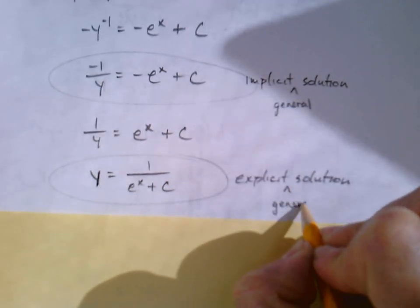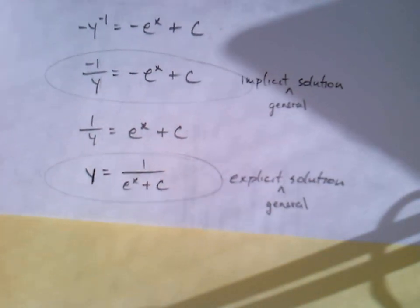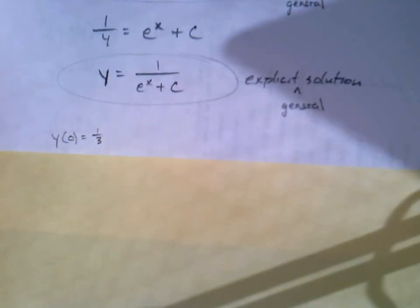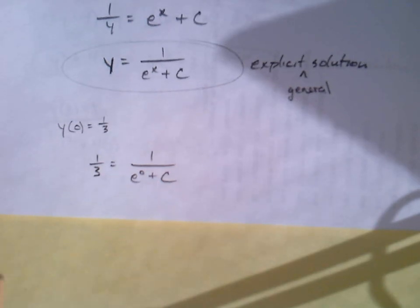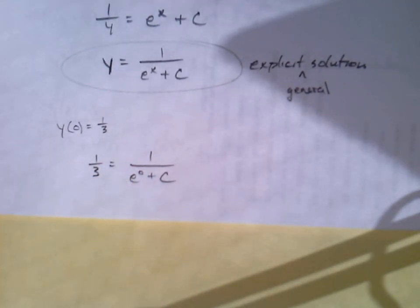We're not quite done with this question. We've got the general solution. We still need to look at that initial condition. The initial condition was y of zero equals one third. That means when x equals zero, y equals one third. We're going to plug those in - plug in one third for our y, plug in zero for x. We're going to solve and figure out the value of C.